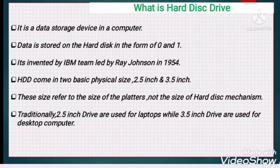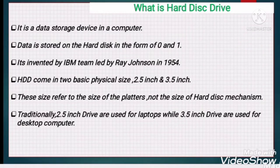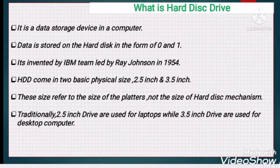IBM first used this hard disk in minicomputers and mainframe computers in 1956. At that time, the capacity of the hard disk was very small — only about 1 GB — and a 1 GB hard disk was the size of a big refrigerator in 1980. Its price was $15,000. But nowadays, hard disk capacity ranges from 500 GB to 32 TB and is very cheap and widely available in the market.